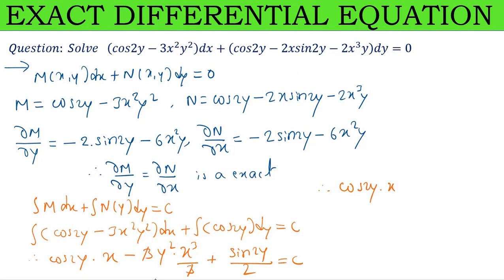Therefore the answer is cos 2y · x - x³y² + sin 2y/2 = C. This is the required solution.